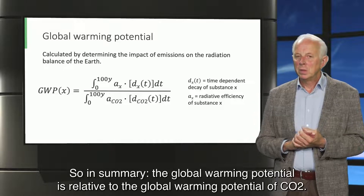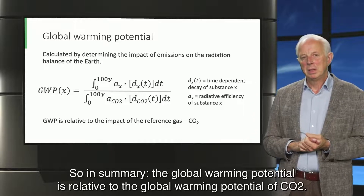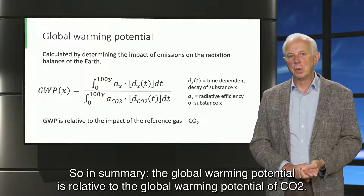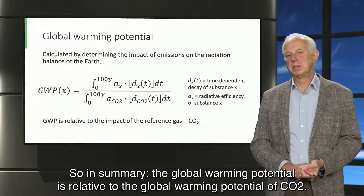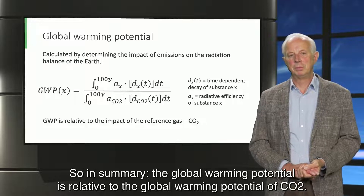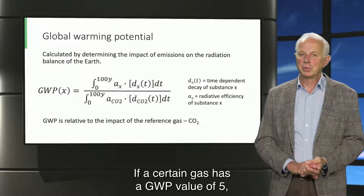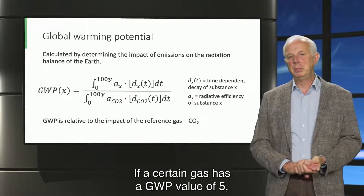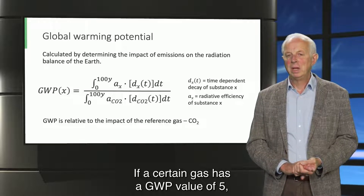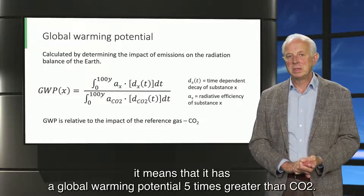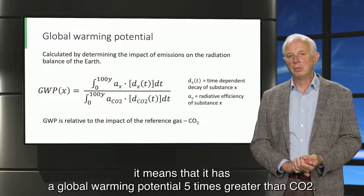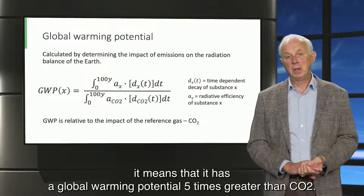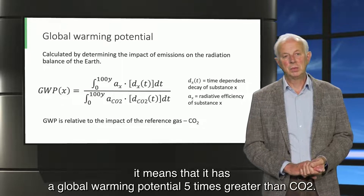So, in summary, the global warming potential is relative to the global warming potential of CO2. If a certain gas has a GWP of 5, it means that it has a global warming potential 5 times greater than CO2.